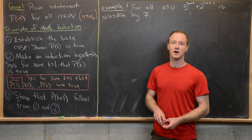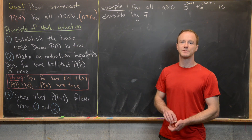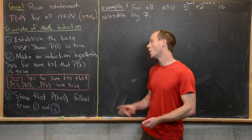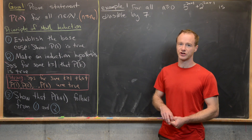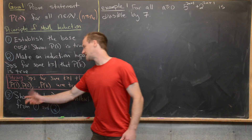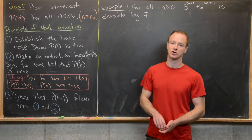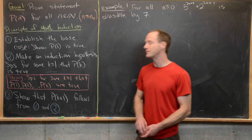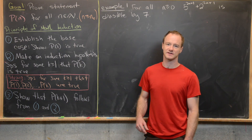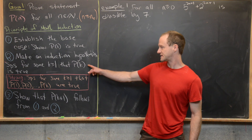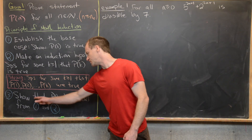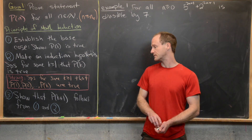Next we want to make something called an induction hypothesis. We'll suppose for some K greater than or equal to 1 that the statement P(K) is true. Or if we're using the variant known as strong induction, we'll suppose for some K ≥ 1 that all of the statements P1, P2, up to Pk are true. Then we'll show that the truth of the K+1st statement follows from the base case and the induction hypothesis.